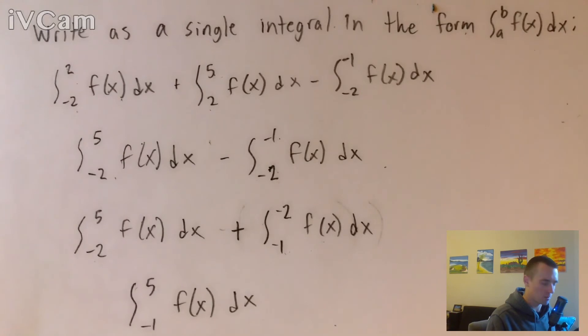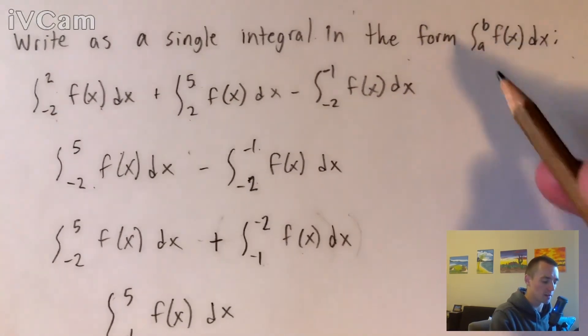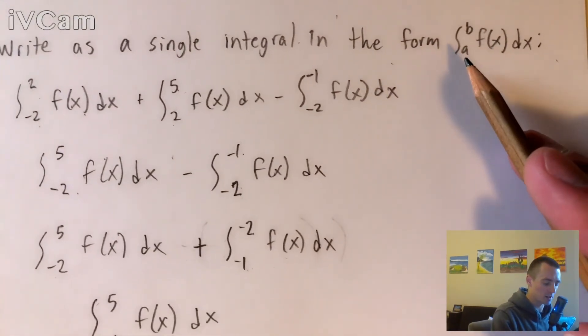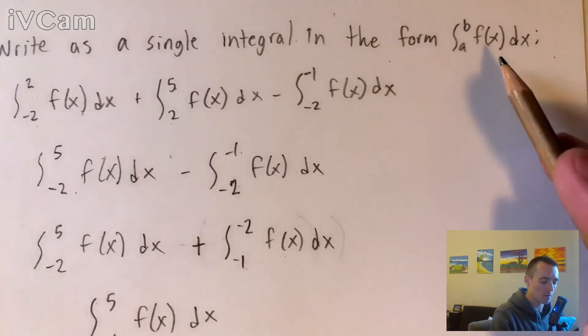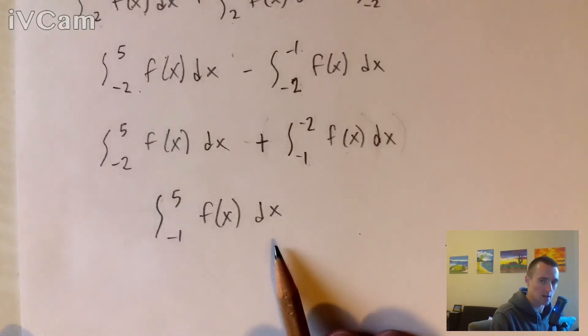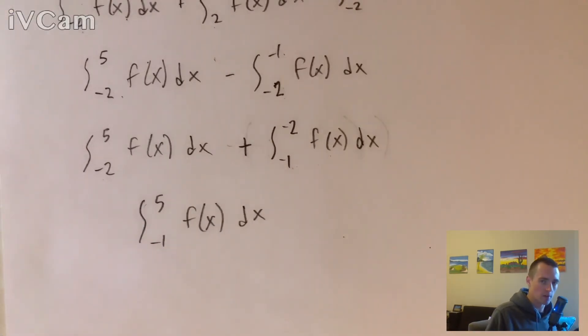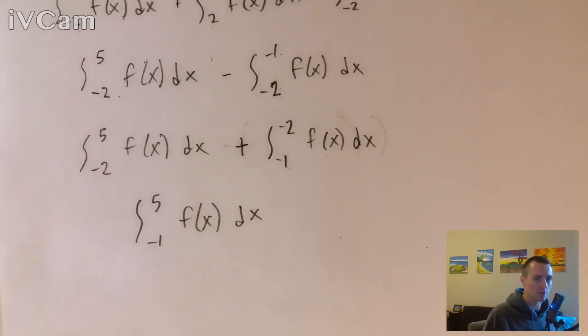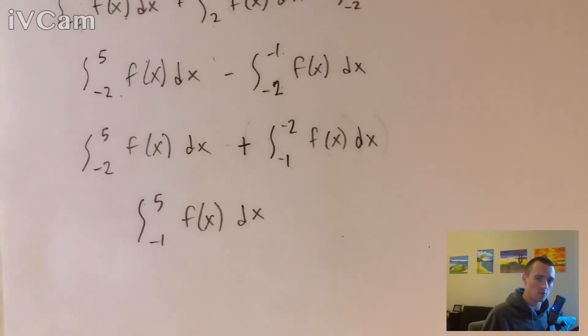Now you can see we've got this in the exact form that they wanted: just an integral from some number to some number of f(x)dx, which is exactly what we have here - the integral from -1 to 5 of f(x)dx. Like I said, these properties are all on my Calculus 2 study guide. There's a link in the description so you can check that out for yourself. Hopefully you found this helpful. Thank you and see you next time.